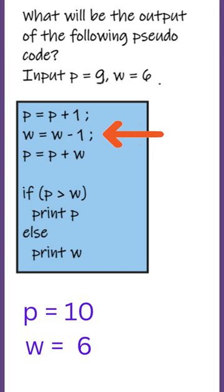In the second line, we have to perform w minus 1. w contains 6. 6 minus 1 is equal to 5 and the result will be stored in w. So now w contains 5.